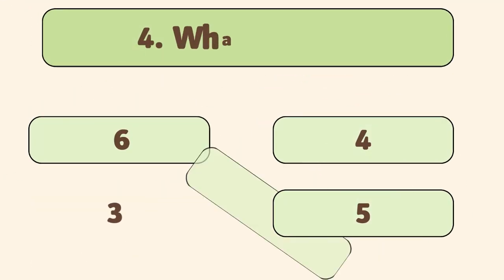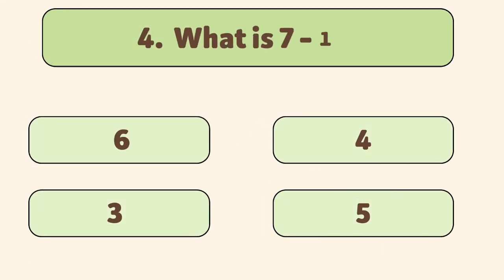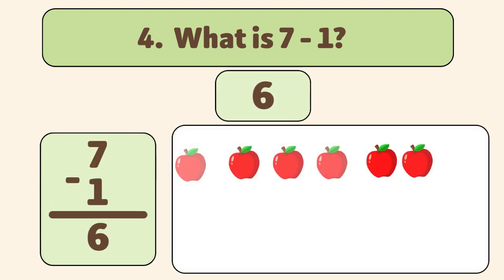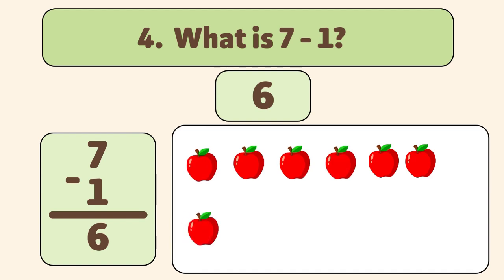What is seven minus one? The answer is six. We start with seven apples and take away one. Let's count. One, two, three, four, five, six, seven. We have six apples now.